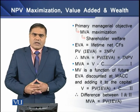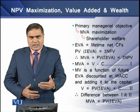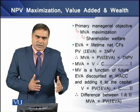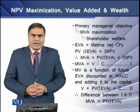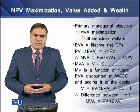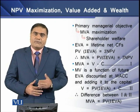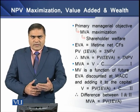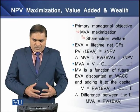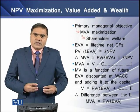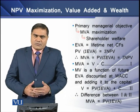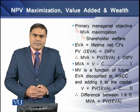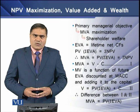Market value added is the difference between the market value of a firm and its capital. When we deduct capital from the total market value, the resulting figure is known as market value added. The market value of a firm is basically a function of its future EVAs discounted at its WACC, adding the resulting present value of EVAs to the company's capital. The difference between these two equations confirms that market value added is equal to the present value of the firm's future EVAs.